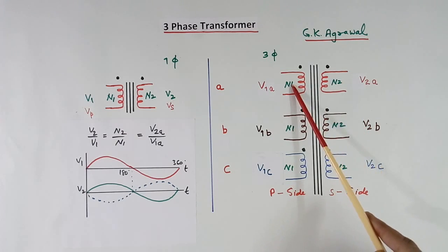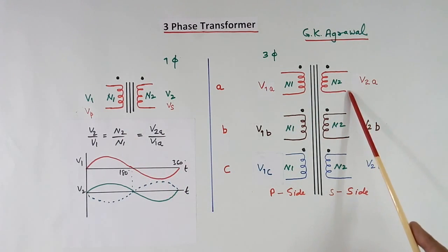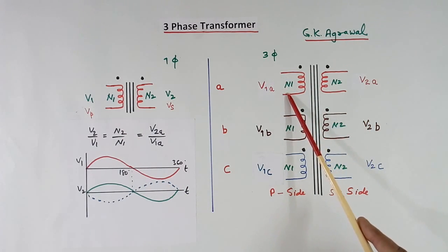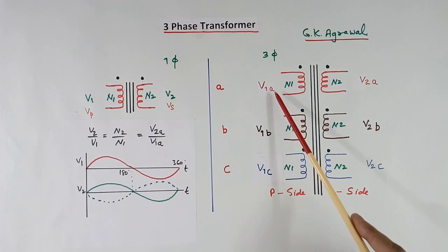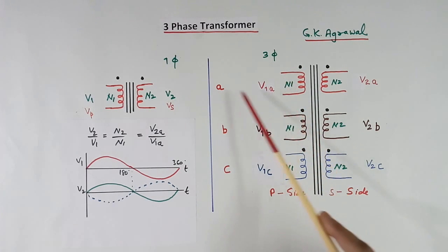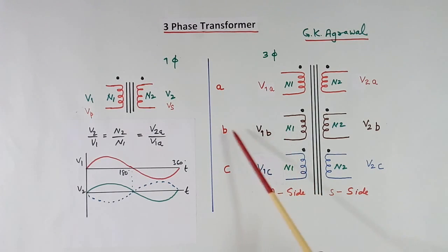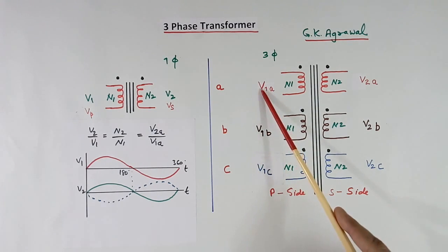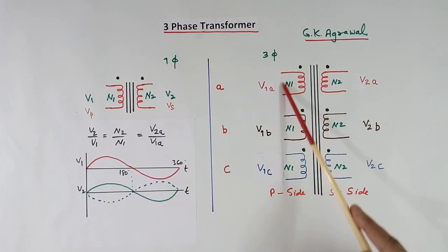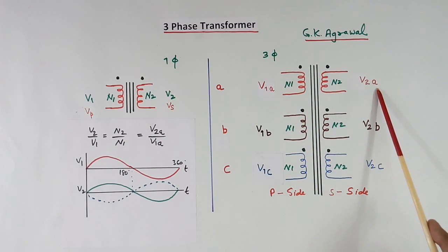So N2 by N1, the turn ratio, will be equal to this voltage divided by this voltage. Here I have written A because this is the winding of A phase. Here I have written B, meaning winding of B phase. This is C phase. V1a means this side winding, and V2a means this side winding.